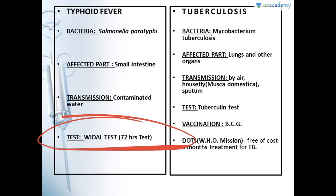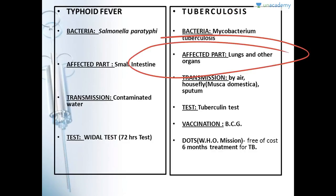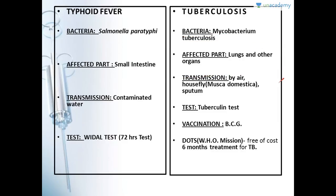Next is tuberculosis. The bacteria for tuberculosis is Mycobacterium tuberculosis. The affected part is lungs and other organs — it could be lung TB, bone TB, or brain TB sometimes. It depends where the bacteria has attacked. The transmission is by air, by housefly — scientific name Musca domestica — or by sputum.